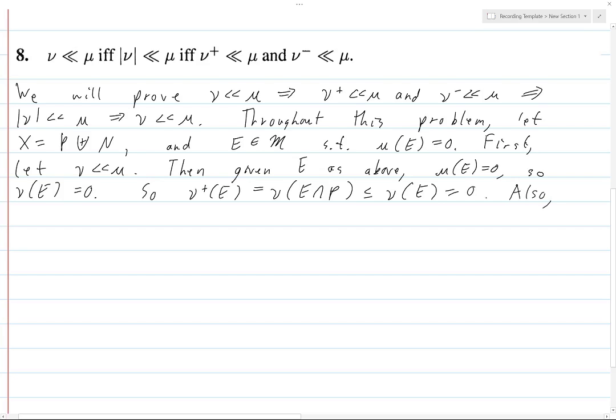Similarly, we have ν⁻ of E is minus ν of E intersect N. And this is less than or equal to minus ν of E, and that's just because the inequality for these two would go in the opposite direction, since ν is negative. And so, basically, this just works. But then this is minus zero, which I'm pretty sure is zero.